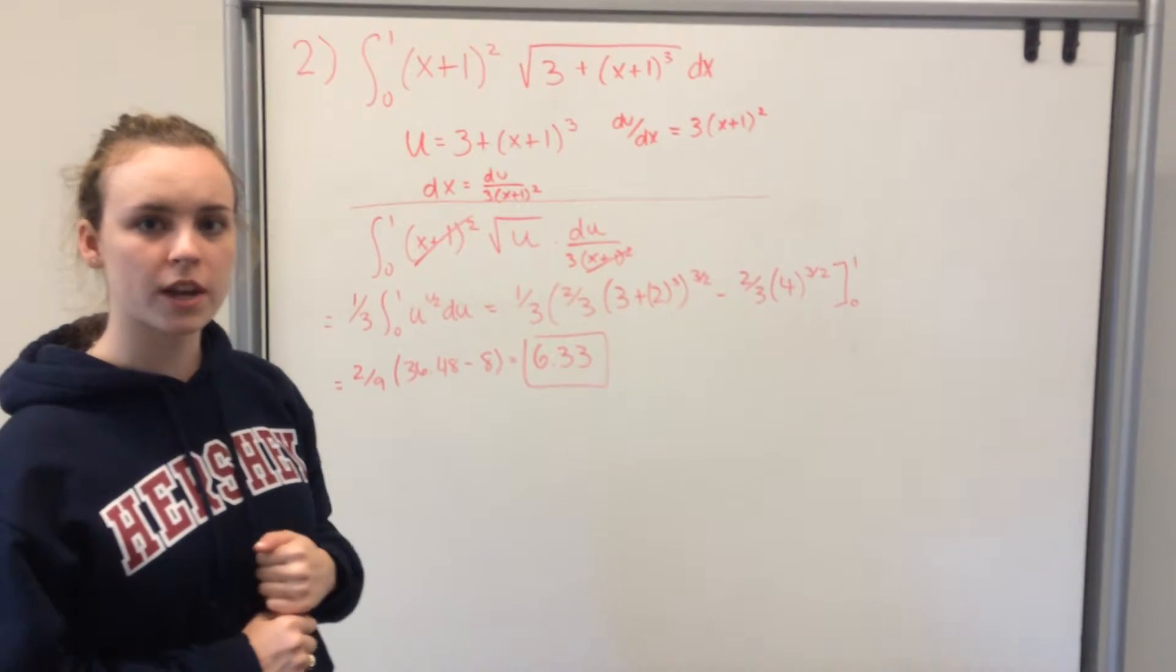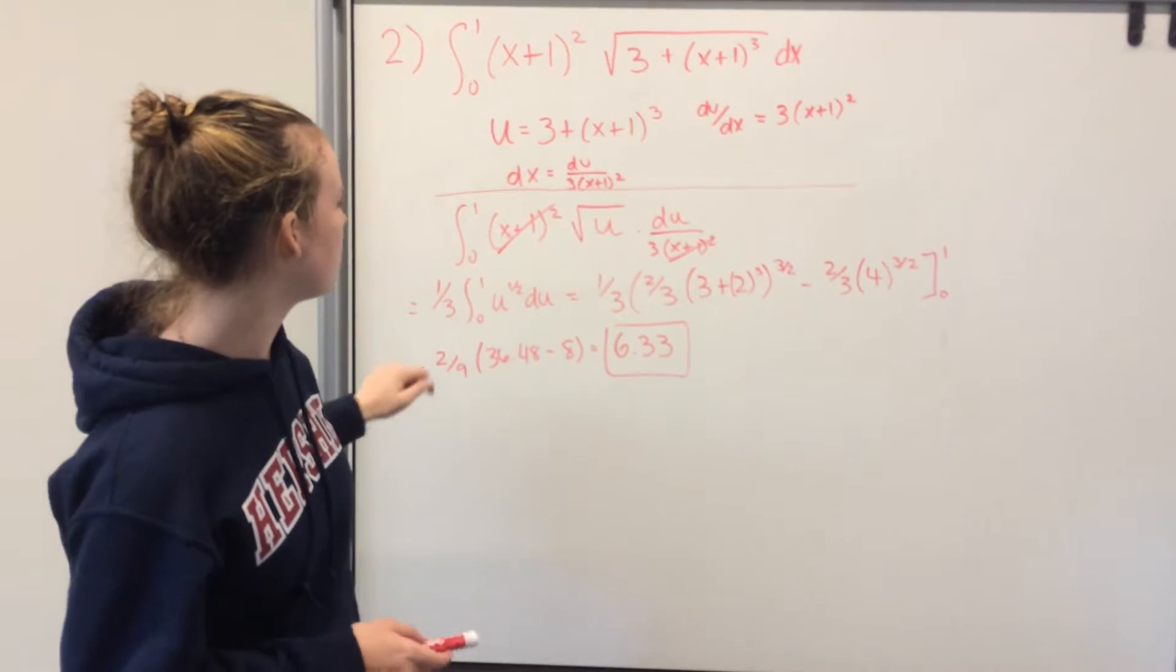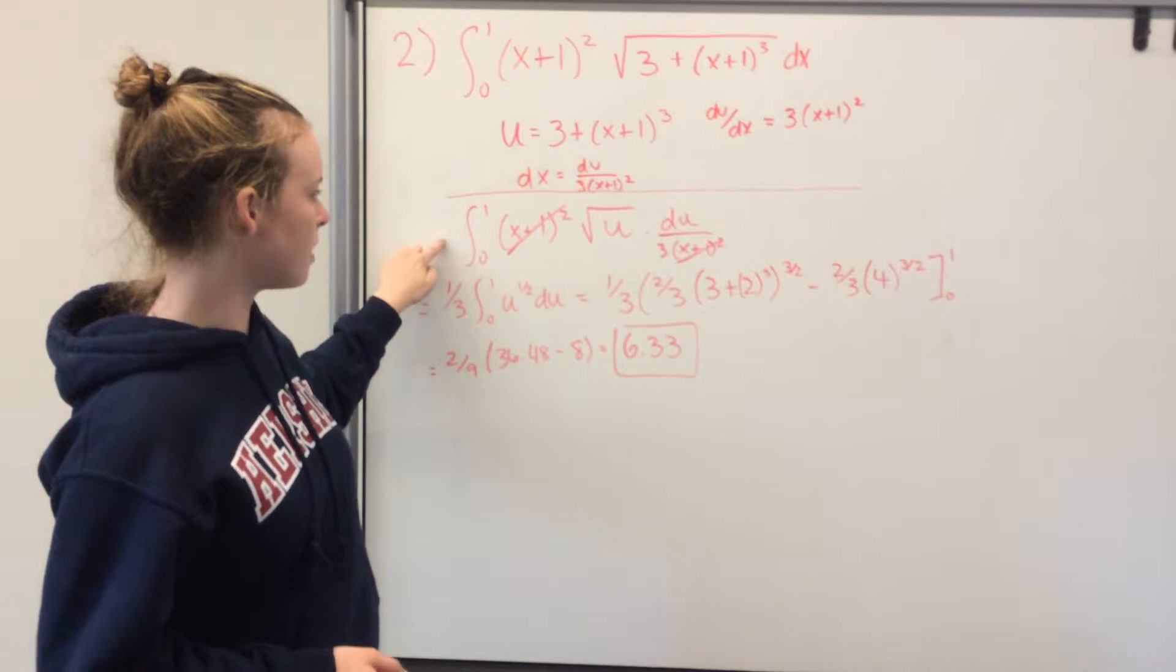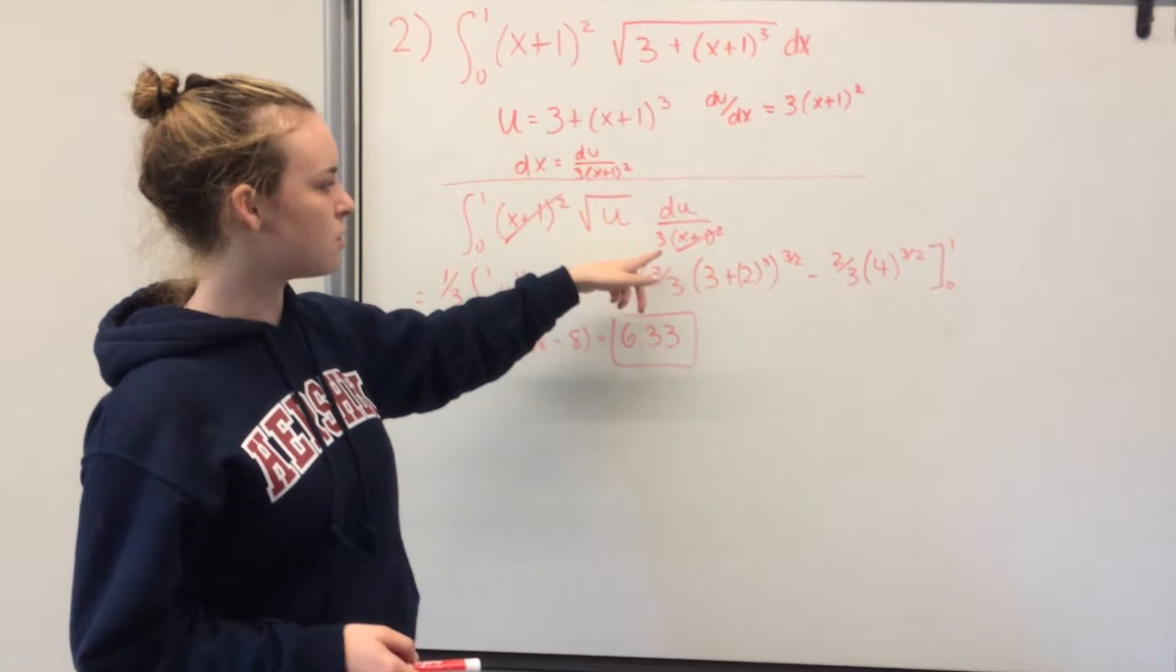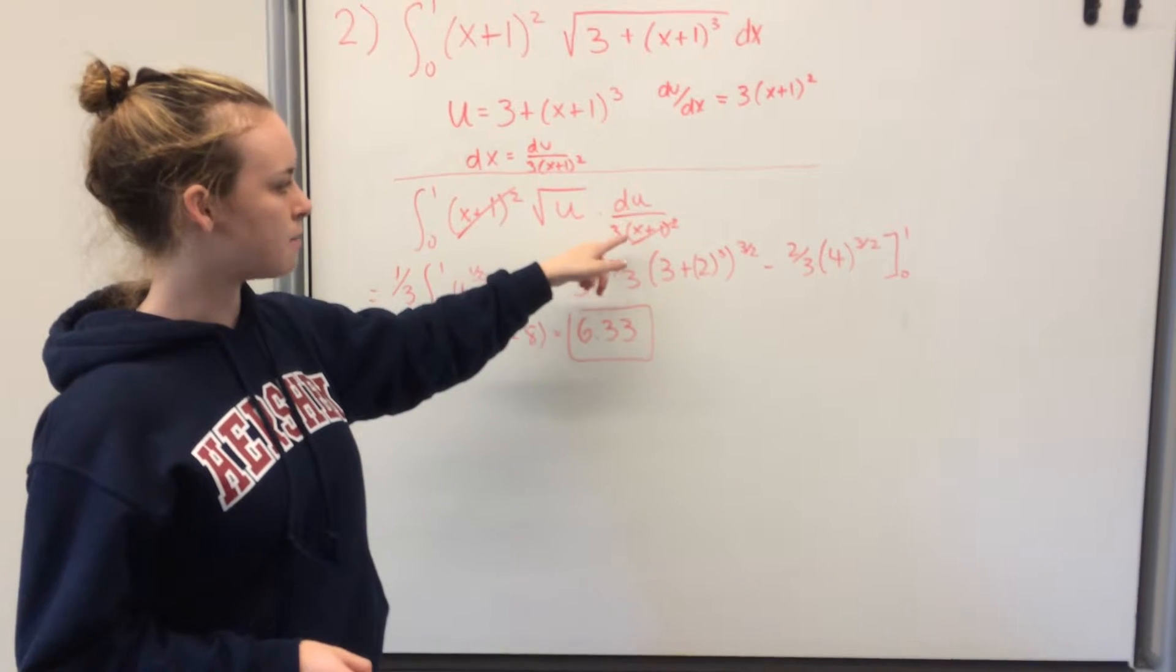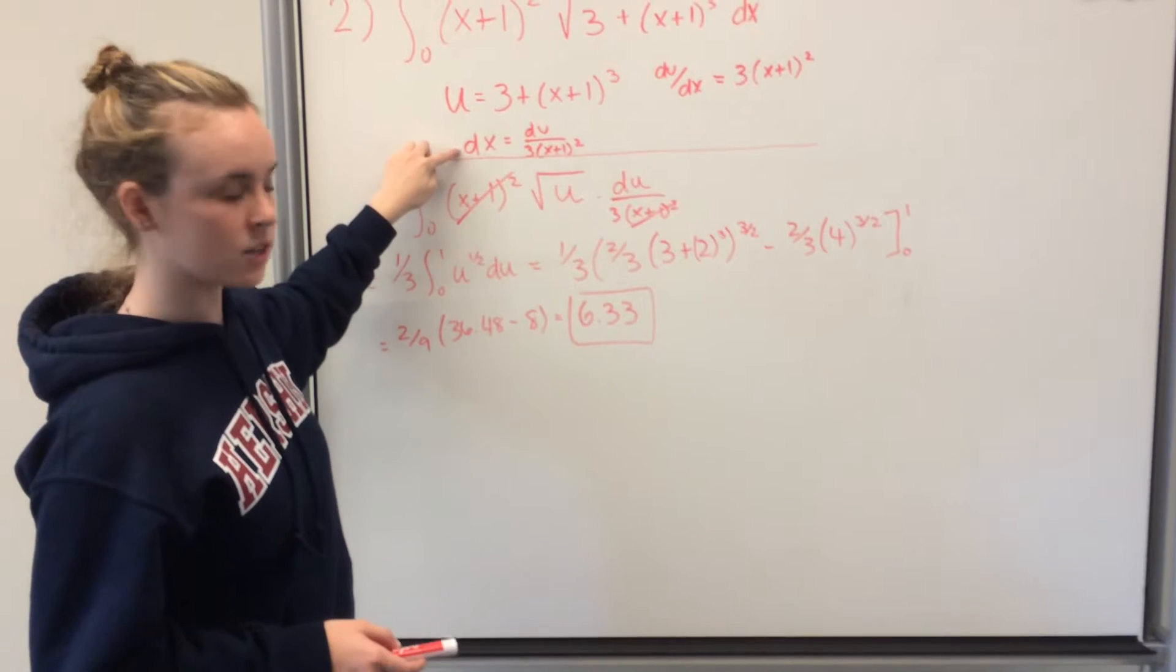Now you plug back into the equation using u instead of this term. So you get the integral from 0 to 1 of x plus 1 squared times the square root of u, you get du over 3 times x plus 1 squared, and that's from the dx up here, using that equation.